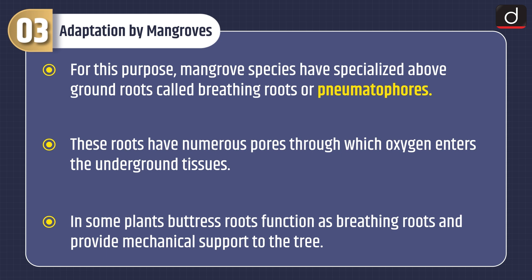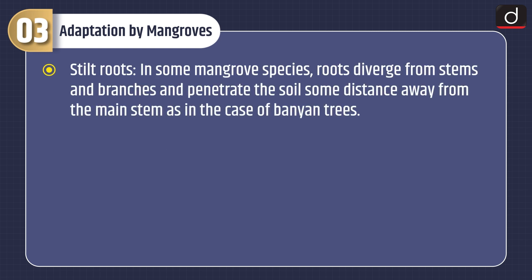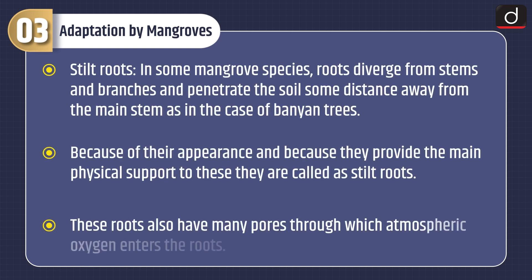These roots have numerous pores through which oxygen enters the underground tissues. In some plants, buttress roots function as breathing roots and provide mechanical support to the tree. Stilt roots: in some mangrove species, roots diverge from stems and branches and penetrate the soil some distance away from the main stem, as in the case of banyan trees. Because of their appearance and because they provide the main physical support, they are called stilt roots.